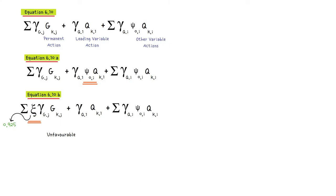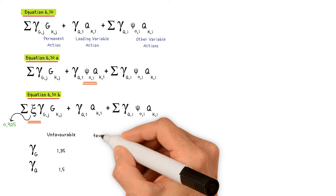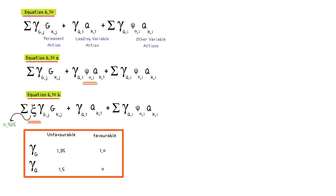For unfavorable actions, the partial safety factor for permanent actions γG is 1.35 and for variable actions γQ is 1.5. For favorable actions, the permanent actions factor is 1.0 and the variable actions factor is zero. An unfavorable action is one that helps, for example, the foundation to fail when the vertical load is downwards. There may be situations where an action is favorable, such as an upwards load which helps to stop the foundation failing. A favorable variable action has a partial factor of zero because it may not always be present. In accordance with National Annex table A1.1, values of ψ factors for buildings: ψ₀ is 0.7 for most imposed loads and 0.5 for wind actions.